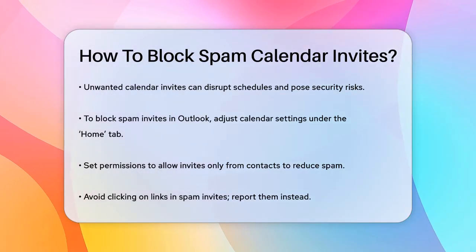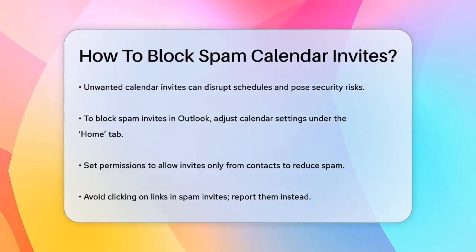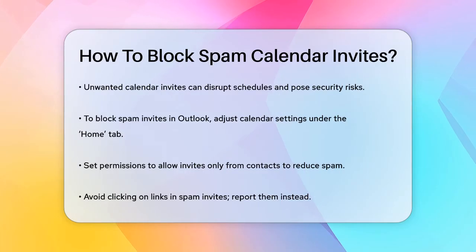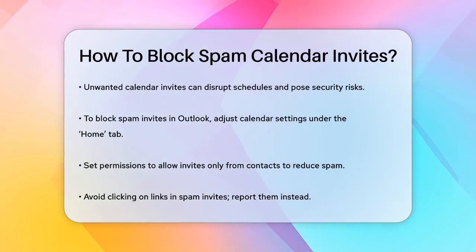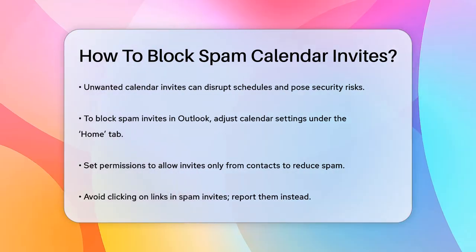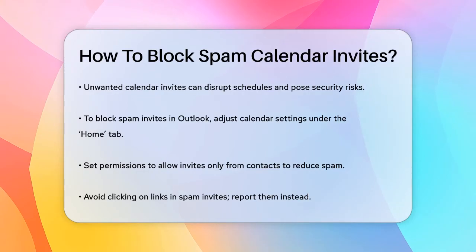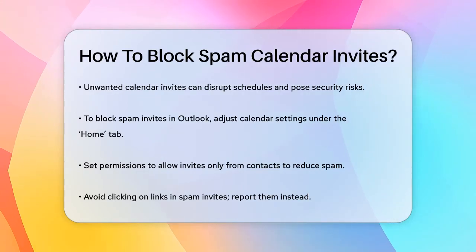If you're using Outlook, one of the first steps is to adjust your calendar settings. Open Outlook, go to the Calendar view, and navigate to the Home tab. Click on Calendar permissions and set the permissions to only allow invites from people within your contacts list. This simple change can significantly reduce the amount of spam you receive.